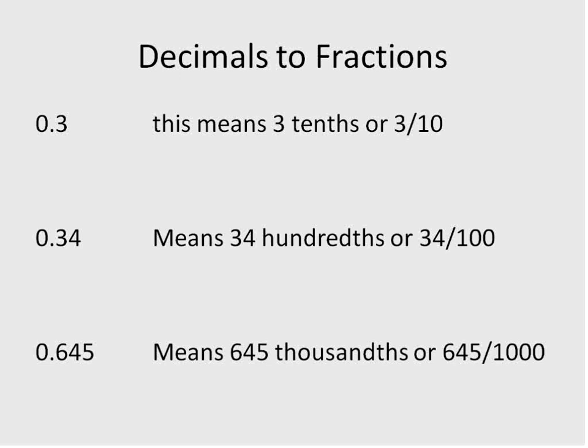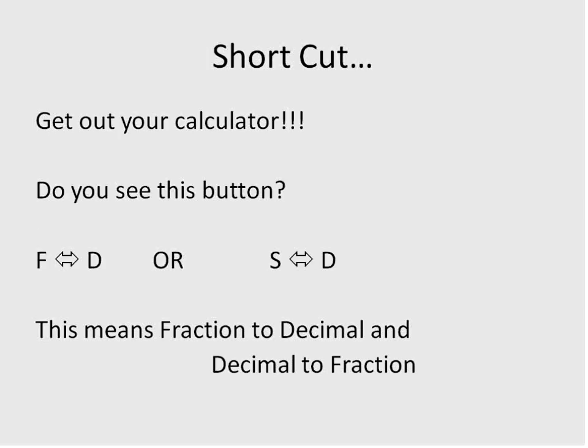The basics of converting decimals to fractions: if it's a terminating decimal, if the decimal stops, you just put it over whatever the placeholder is. If it's thousandths, you put it over a thousand. If it's hundredths, you put it over a hundred. If it's tenths, you put it over ten. And that's how you convert from terminating decimals into fractions.